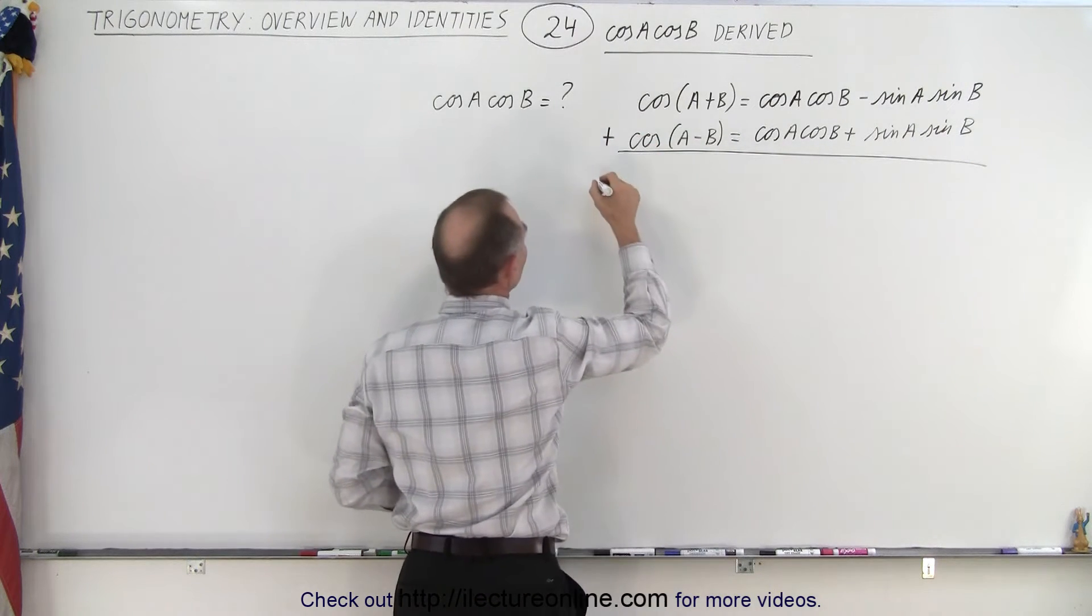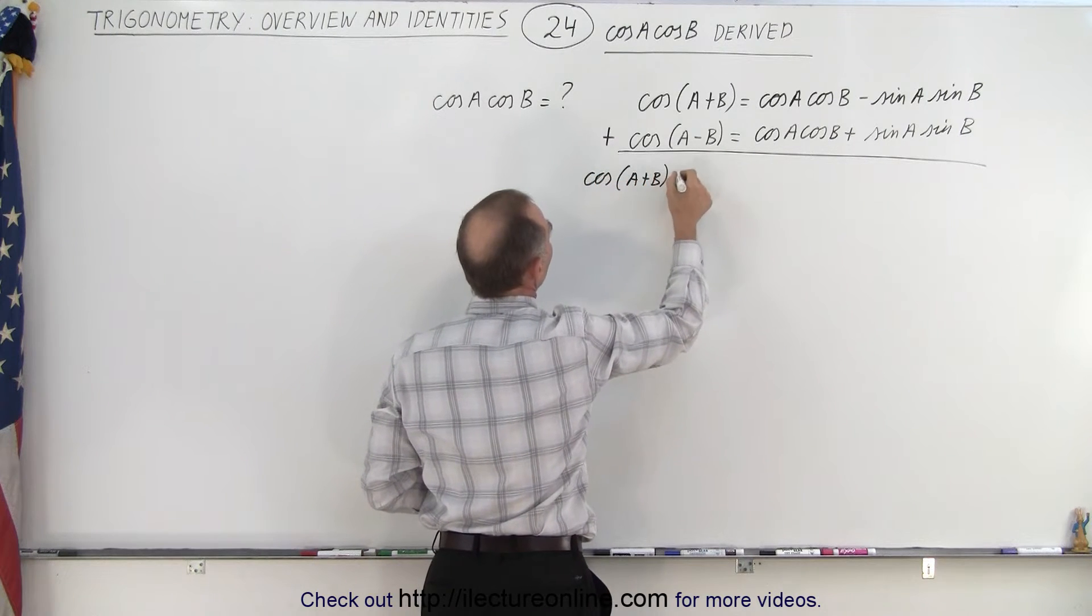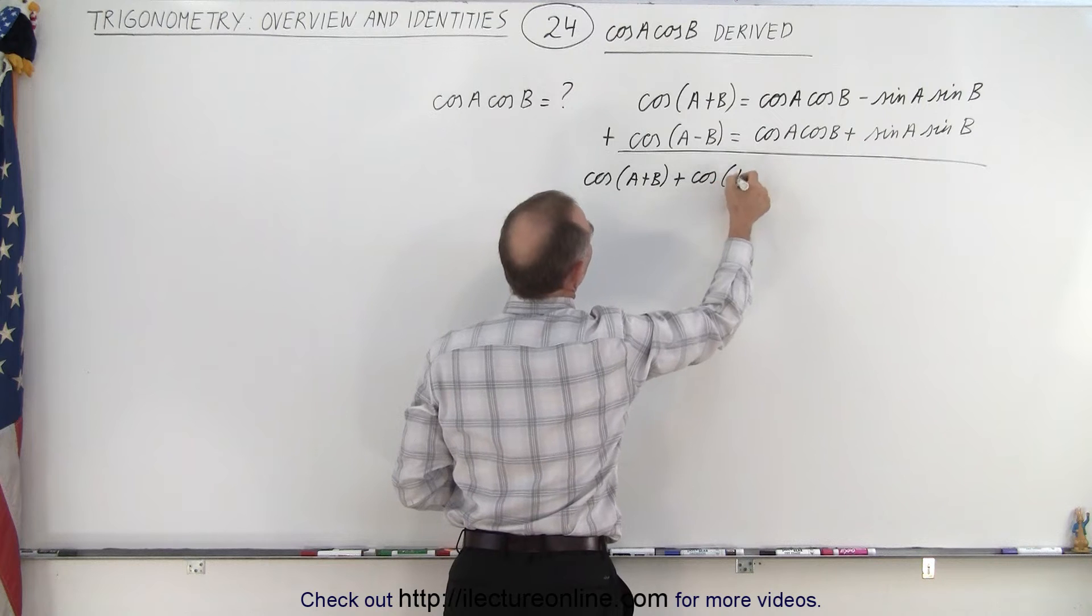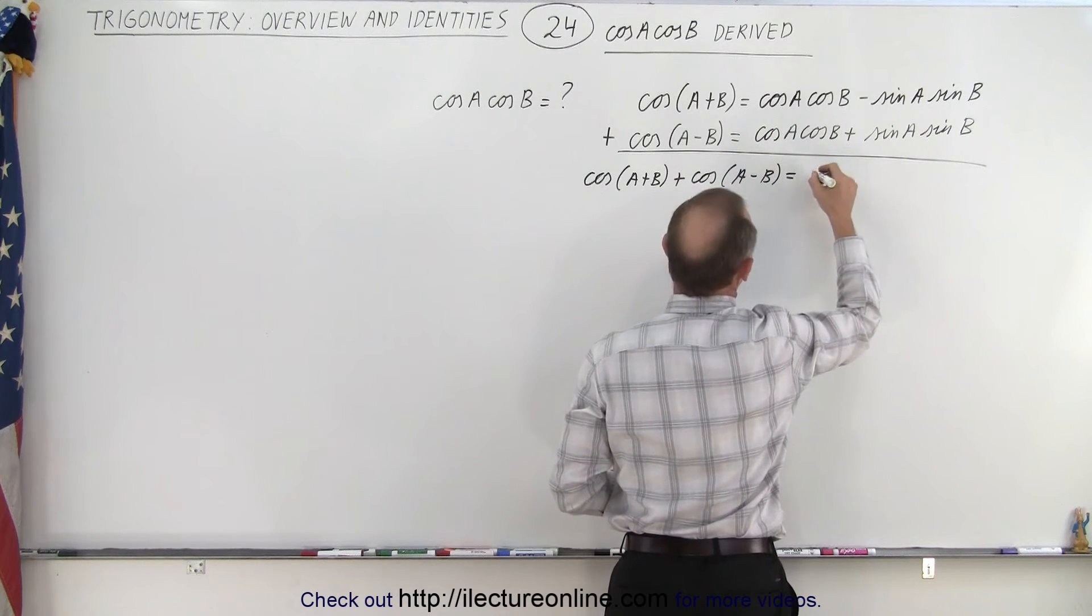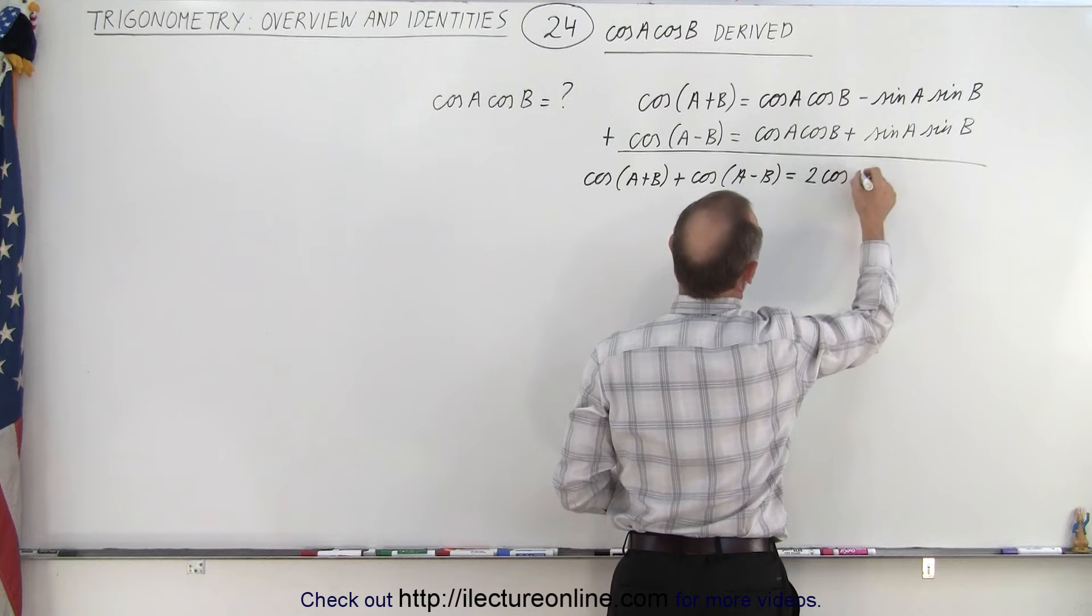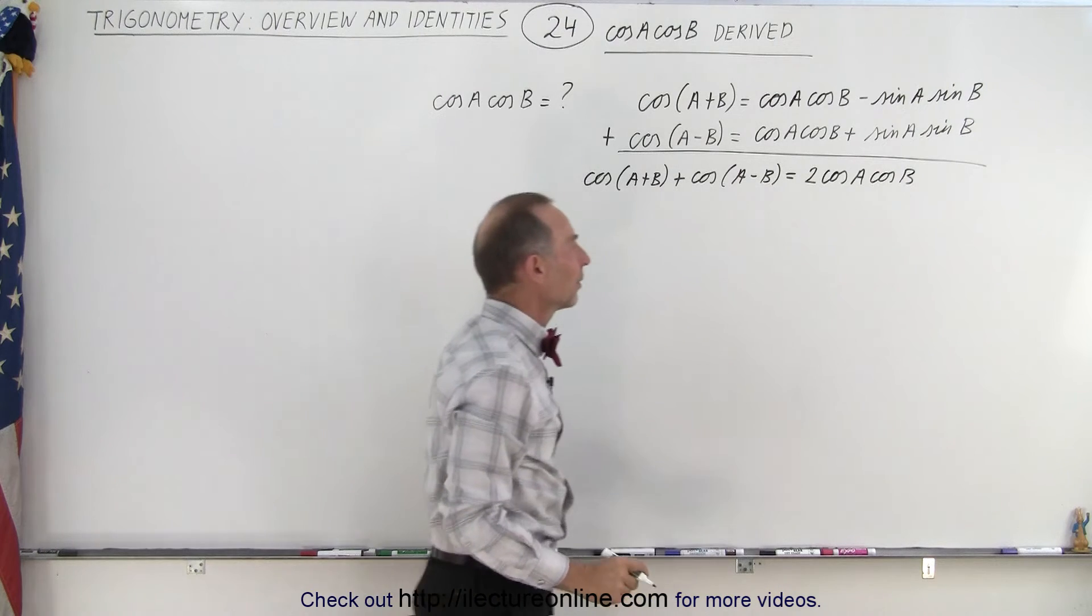So on the left side we get cosine of A plus B plus cosine of A minus B, and that will be equal to two times cosine of A times cosine of B. Notice that those two terms will cancel when we add them up.